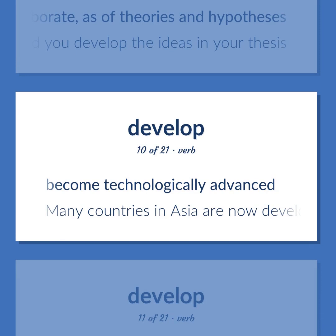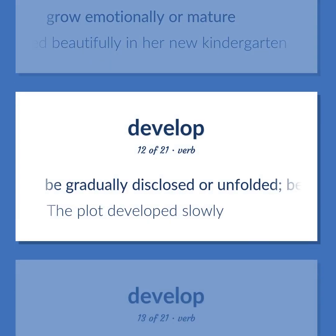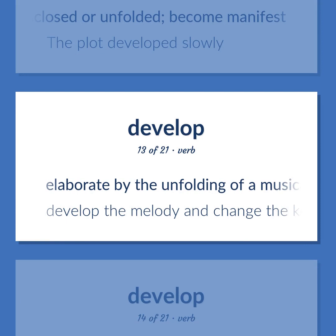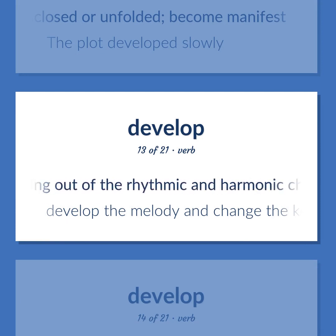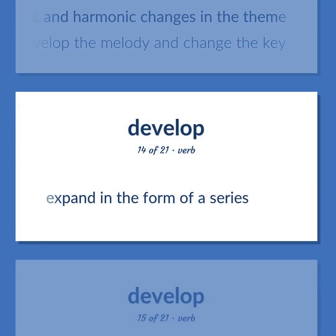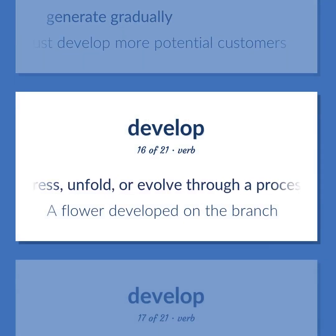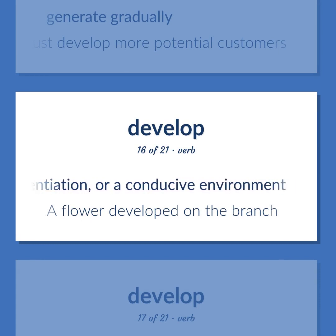Develop: become technologically advanced — 'Many countries in Asia are now developing at a very fast pace.' Grow emotionally or mature — 'The child developed beautifully in her new kindergarten.' Be gradually disclosed or unfolded; become manifest — 'The plot developed slowly.' Elaborate by the unfolding of a musical idea and by the working out of the rhythmic and harmonic changes in the theme — 'Develop the melody and change the key.' Expand in the form of a series. Generate gradually — 'We must develop more potential customers.' Grow, progress, unfold, or evolve through a process of evolution, natural growth, differentiation, or a conducive environment — 'A flower developed on the branch.'